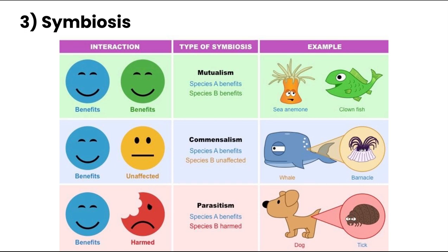The next type is commensalism, where one species is benefiting whereas the other is not affected whatsoever. For example, barnacles living on whales. Suckerfish that attach to sharks get a free mode of transportation, some protection, and scraps of food, whereas the shark is largely unaffected.